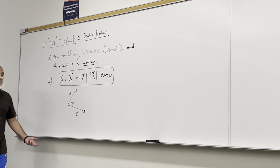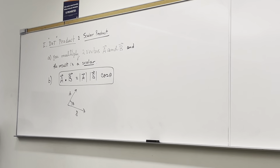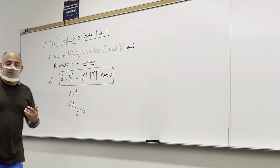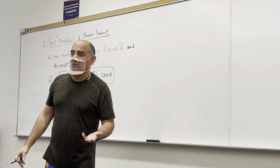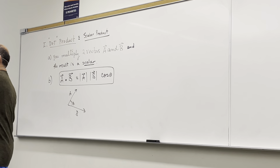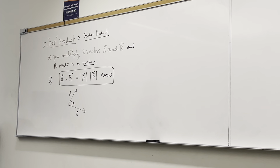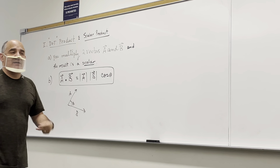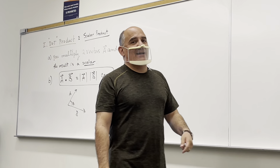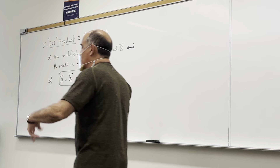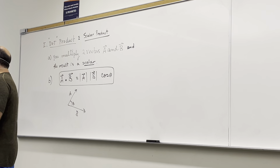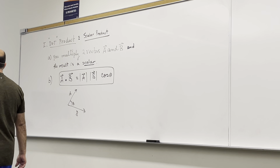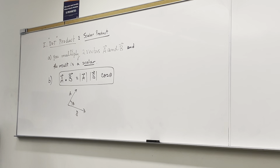When you calculate the dot product — the scalar product — of two vectors, the two vectors do not have to be of the same type. This is different from when you add or subtract vectors. If you add or subtract vectors, the two vectors must be of the same type: you can only add forces to forces, velocities to velocities, and you cannot subtract a force from a velocity. But when you multiply vectors, they do not have to be of the same type.